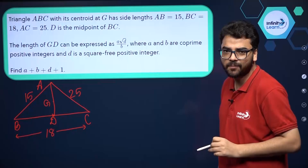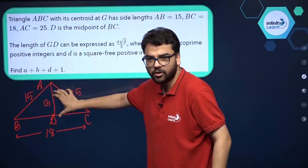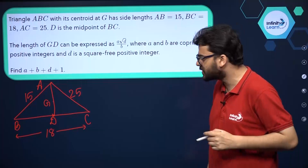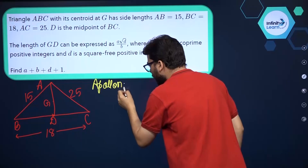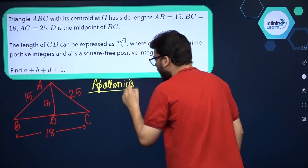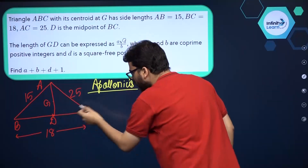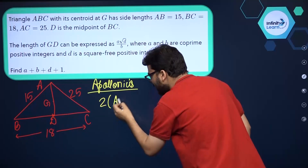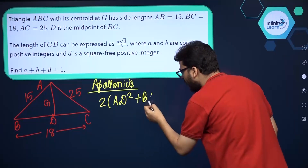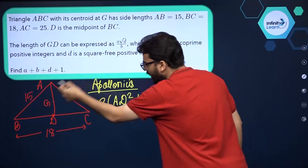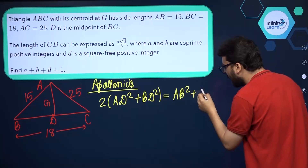I hope this is clear up till here. Now, in order to find the length of AD, we can use the Apollonius theorem. That theorem is very important for these types of questions. The Apollonius theorem says that 2 times AD squared plus BD squared equals AB squared plus AC squared.